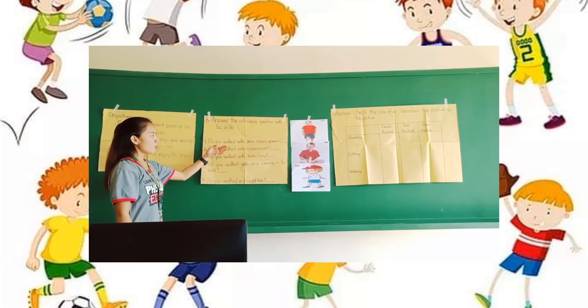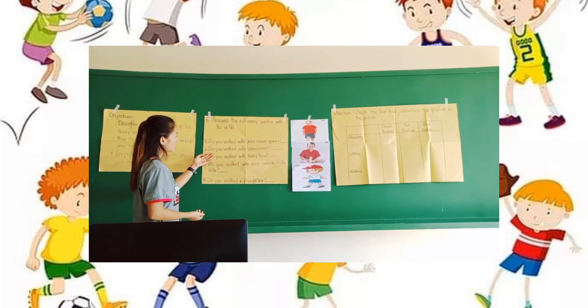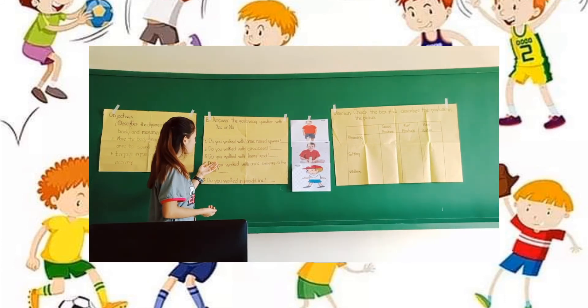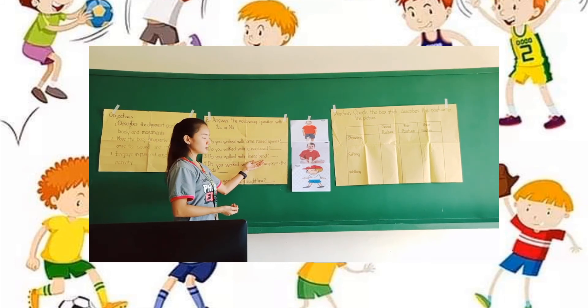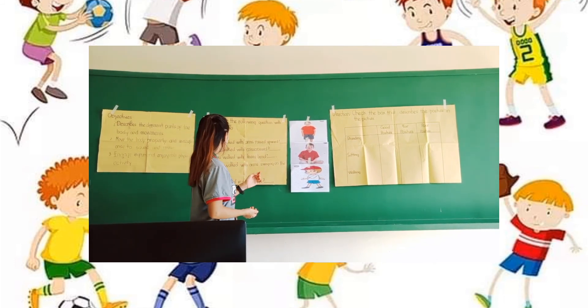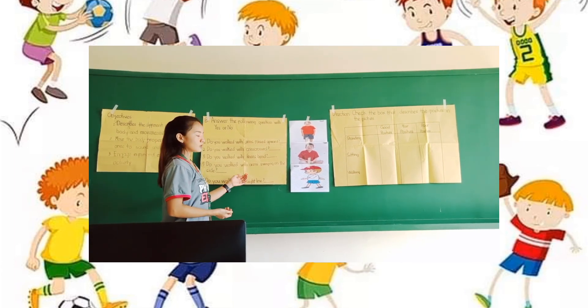Okay, let's answer letter B. Answer the following questions based on yourself. Number one, do you walk with arms raised upward? Number two, do you walk with wrist crossed? Number three, do you walk with wrist bent? Number four, do you walk with arms raised on the side? And that's number five, do you walk in straight line?